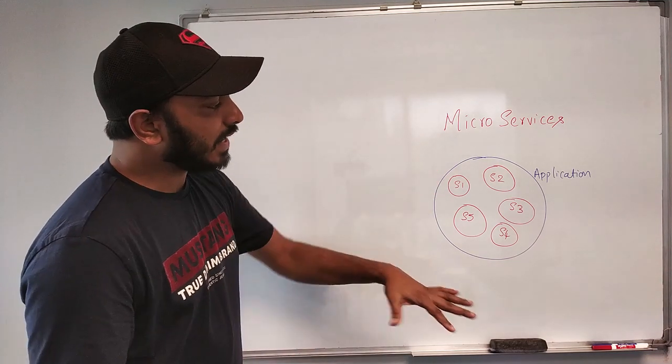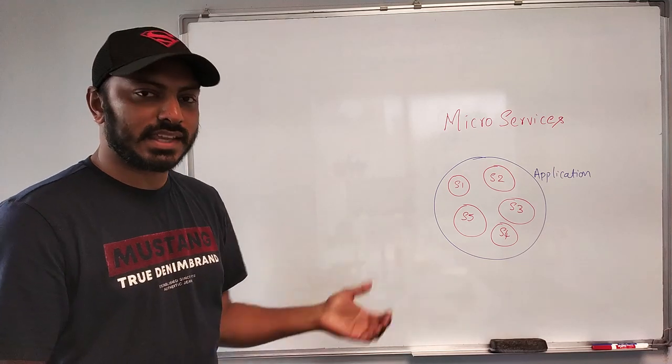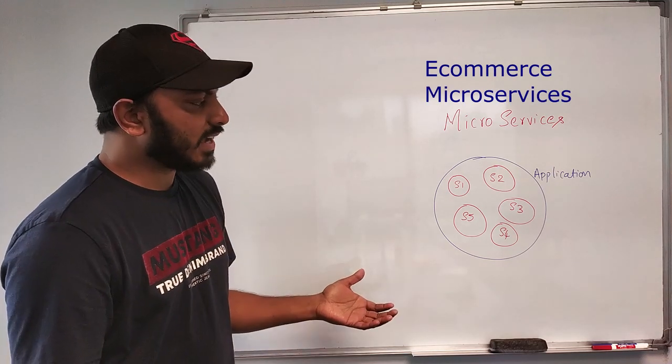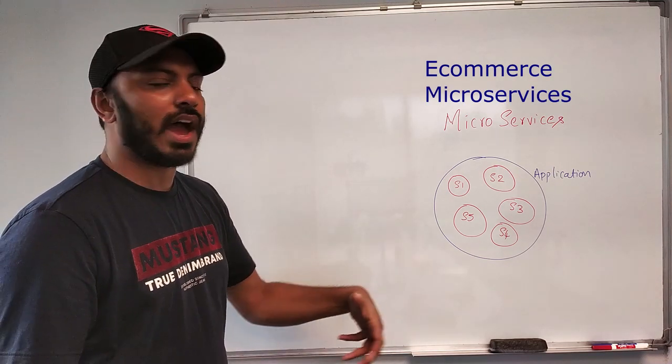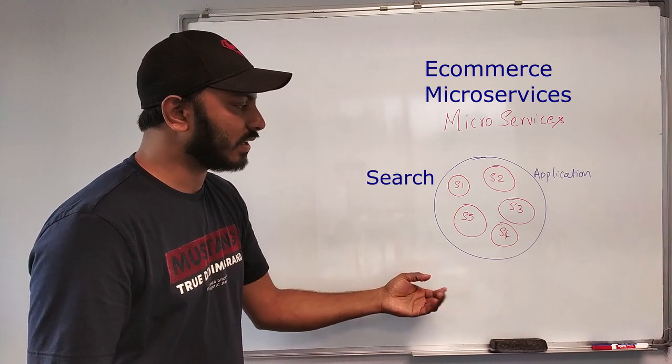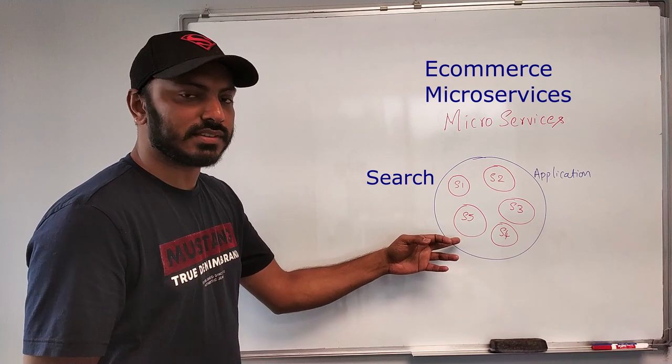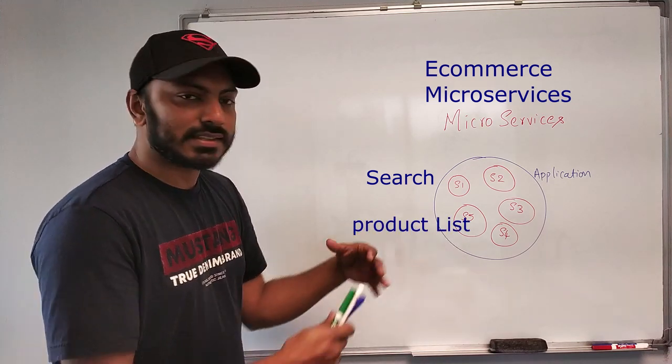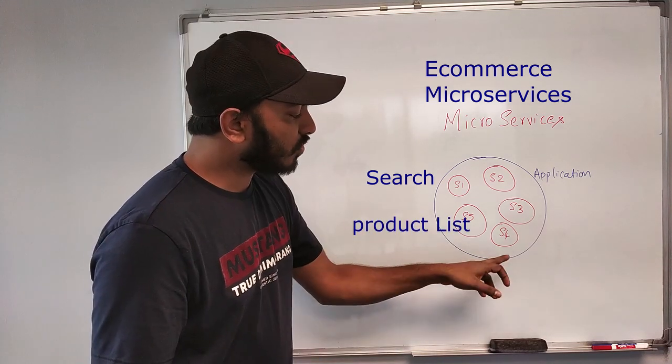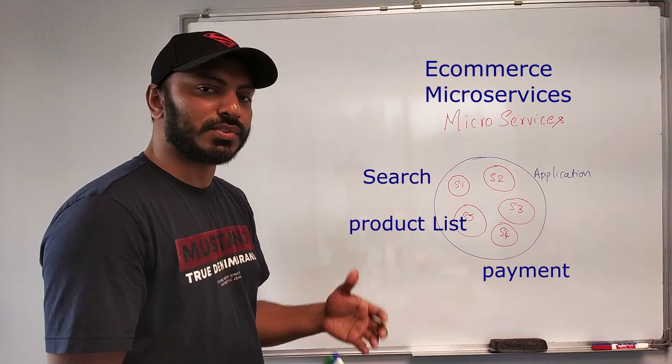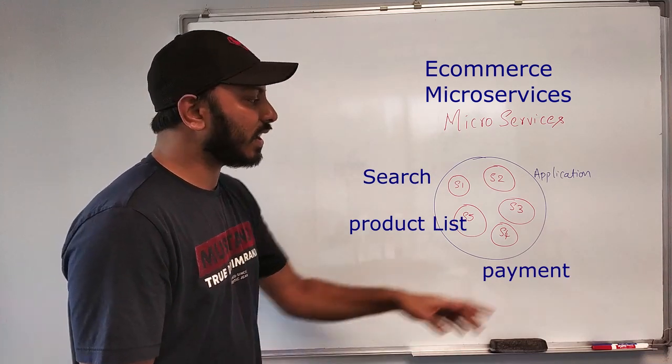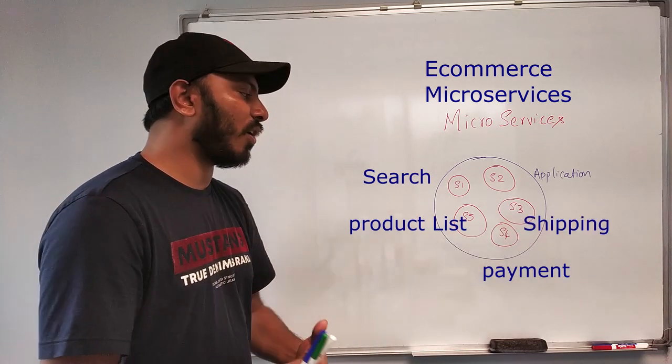So for example, let's take this application as an e-commerce application. In this case, the application will have many services. For example, it might have search the product, it might have one service which is basically listing the product, and there is one more service which is basically used for payment processing.